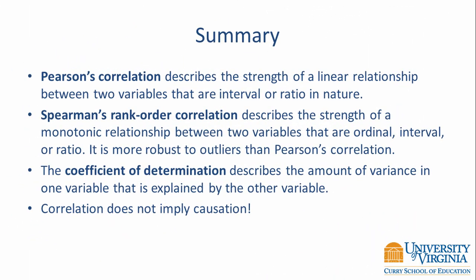In summary, Pearson's correlation describes the strength of a linear relationship between two variables that are interval or ratio in nature. Spearman's rank order correlation describes the strength of a monotonic relationship between two variables that are ordinal, interval, or ratio in nature, and is more robust to outliers than Pearson's correlation. To help describe the strength of a relationship, we can look at the coefficient of determination, which describes the amount of variance in one variable explained by the other. Finally, remember that correlation does not imply causation.